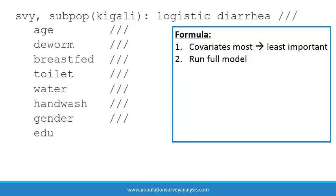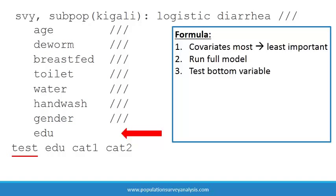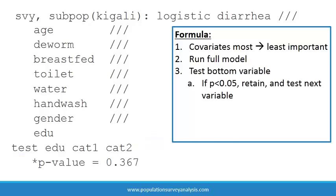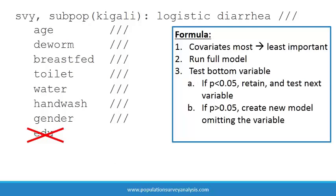Second, run the full model with all covariates. Third, test all variables for statistical significance at p less than 0.05, starting with the bottom variable. If the bottom variable is statistically significant, retain it in the model and test the next most important variable, and so on. If the bottom variable is not statistically significant, create a new model removing the non-significant variable, run the new model, and test significance of all variables starting again from the bottom variable.